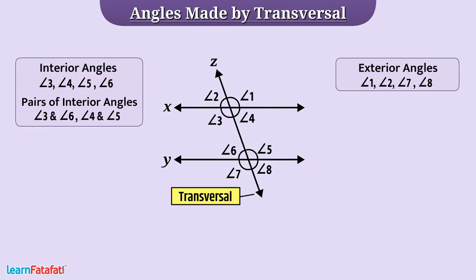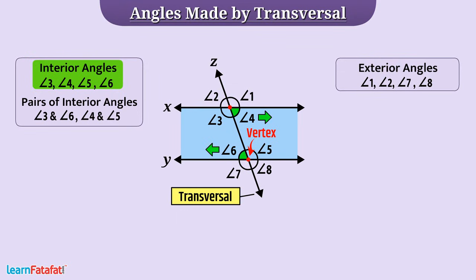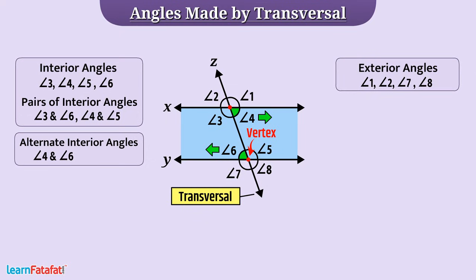We know that these are interior angles. Angle 4 and angle 6 have different vertices. Both are present on the inner side of the transversal and they are on opposite sides of the transversal. Such types of angles are called alternate interior angles.